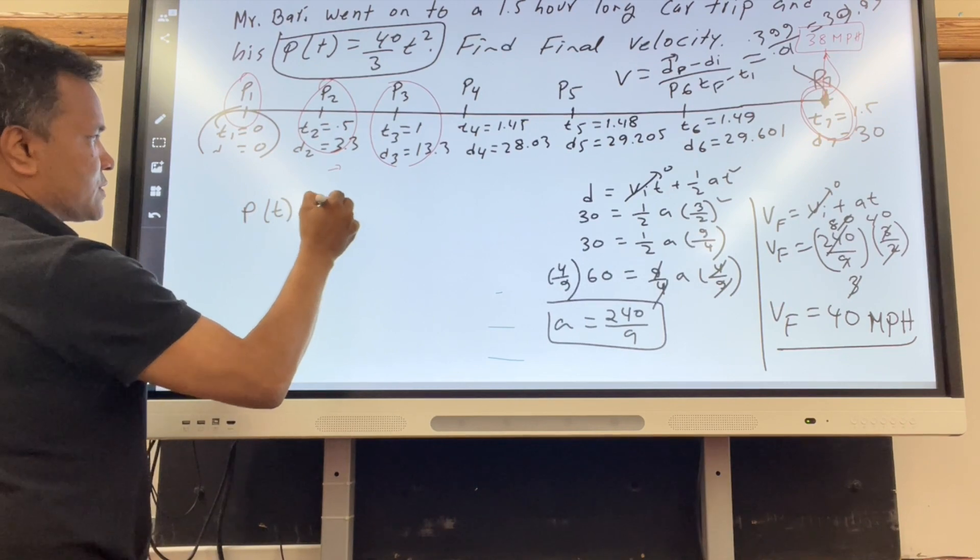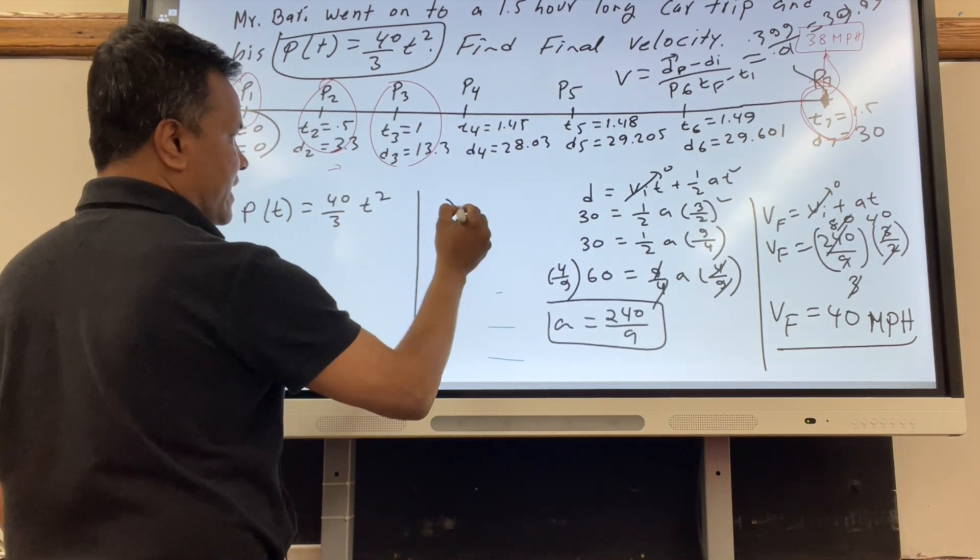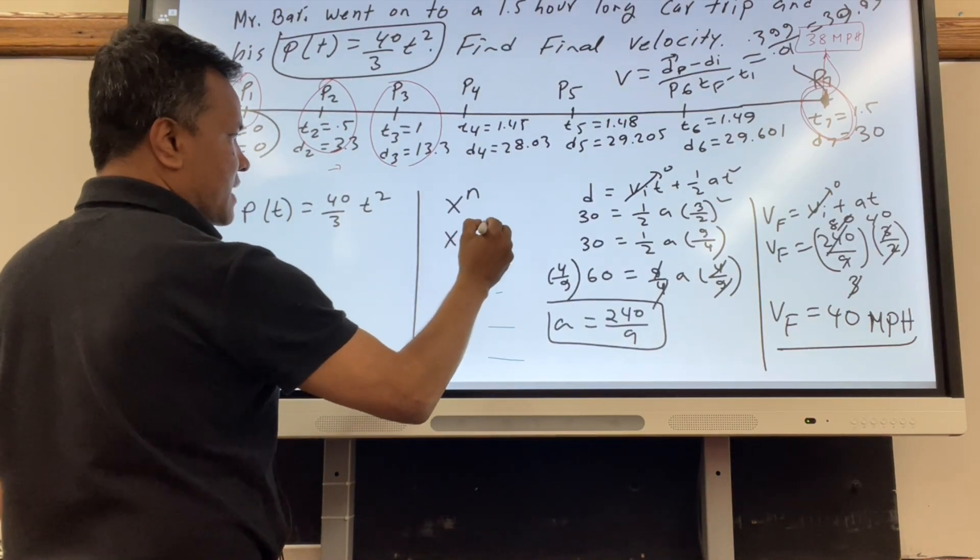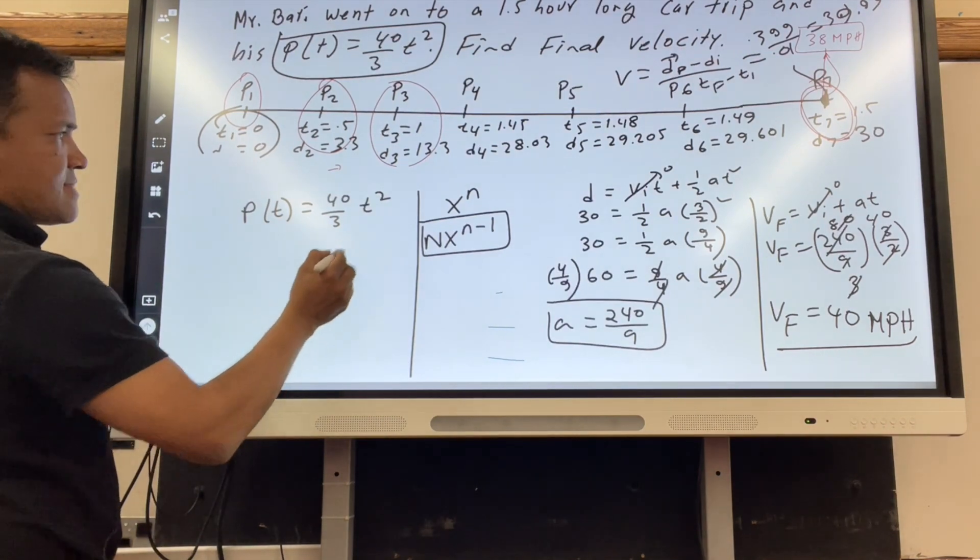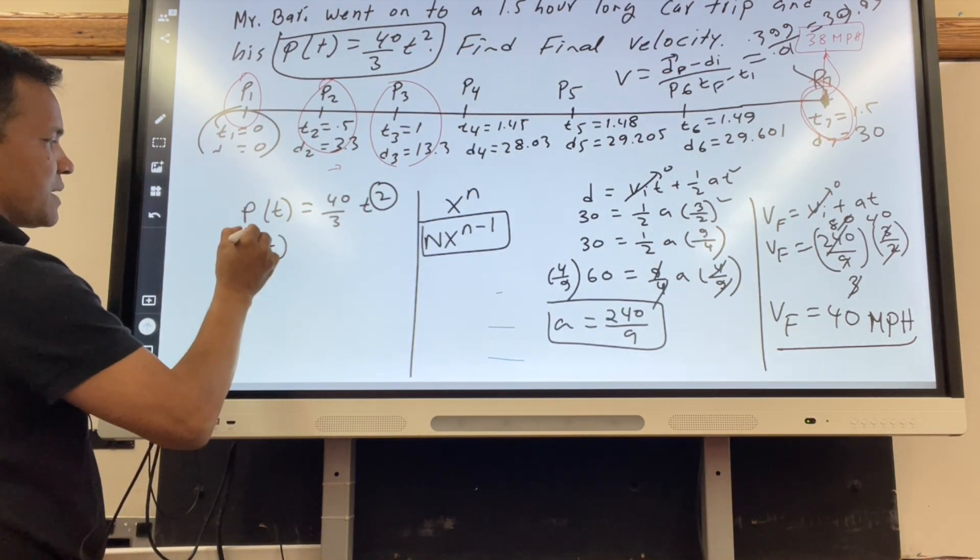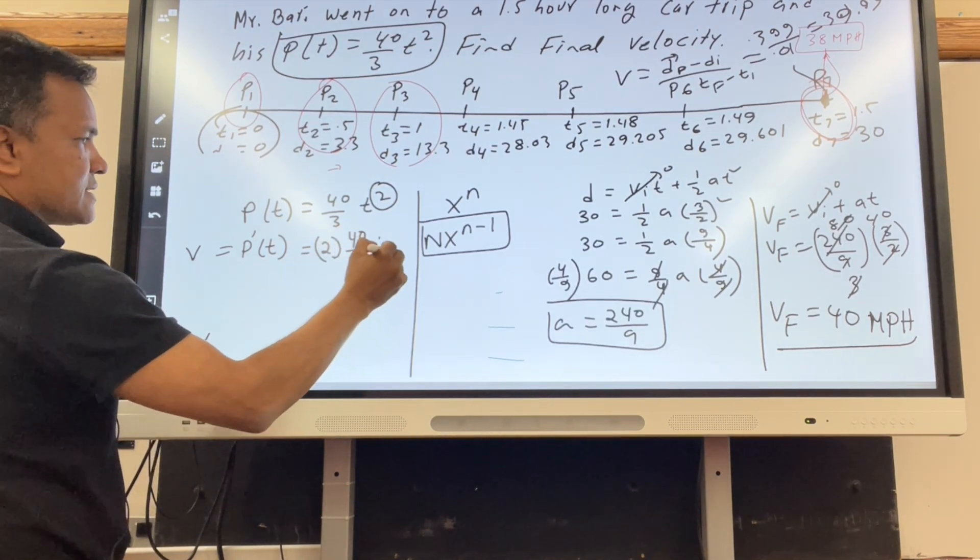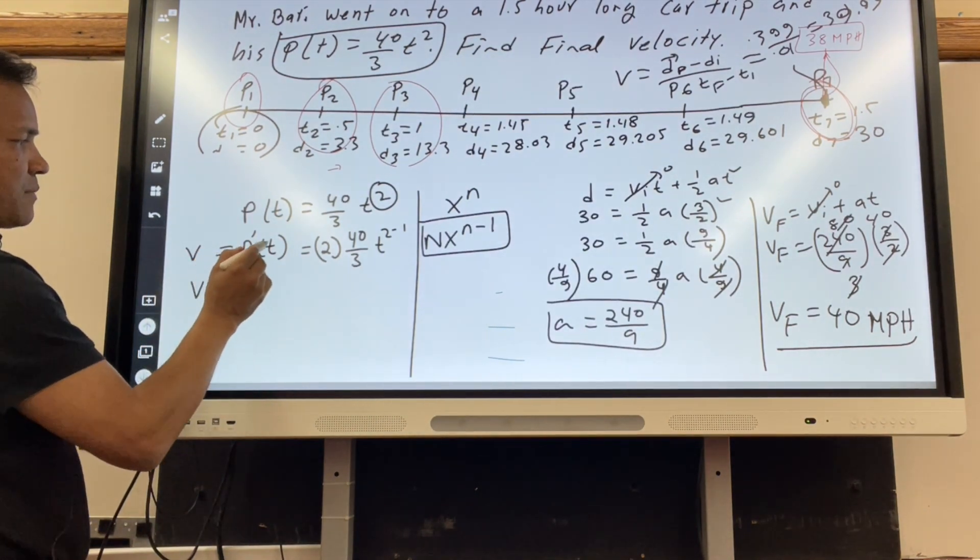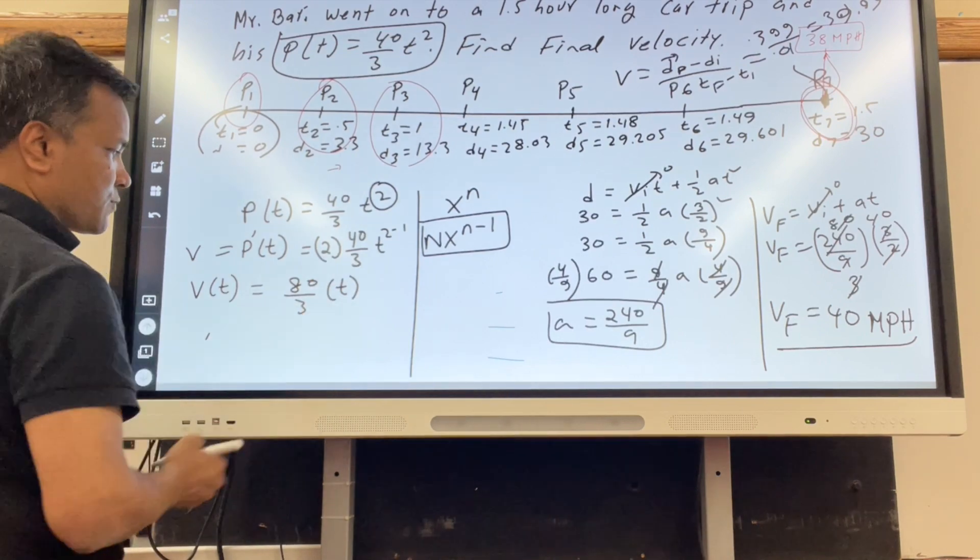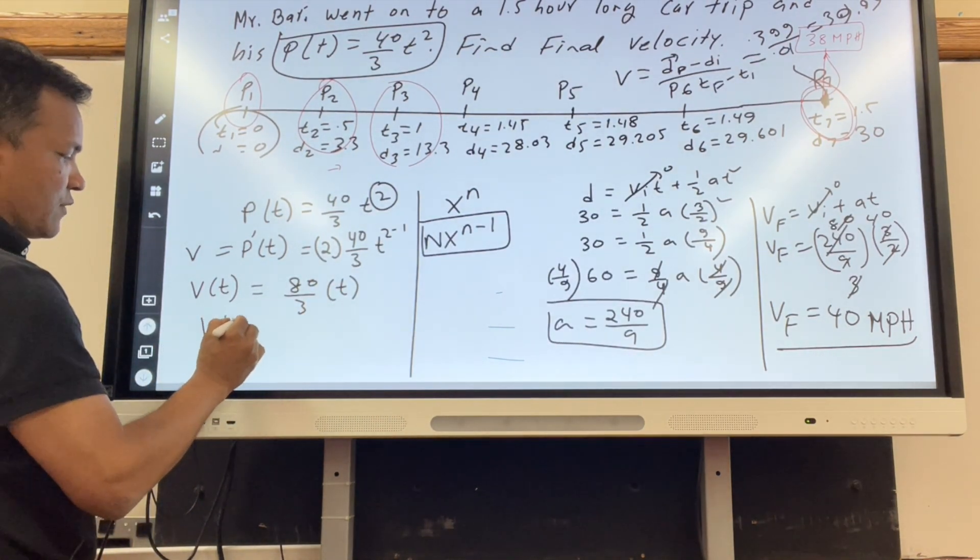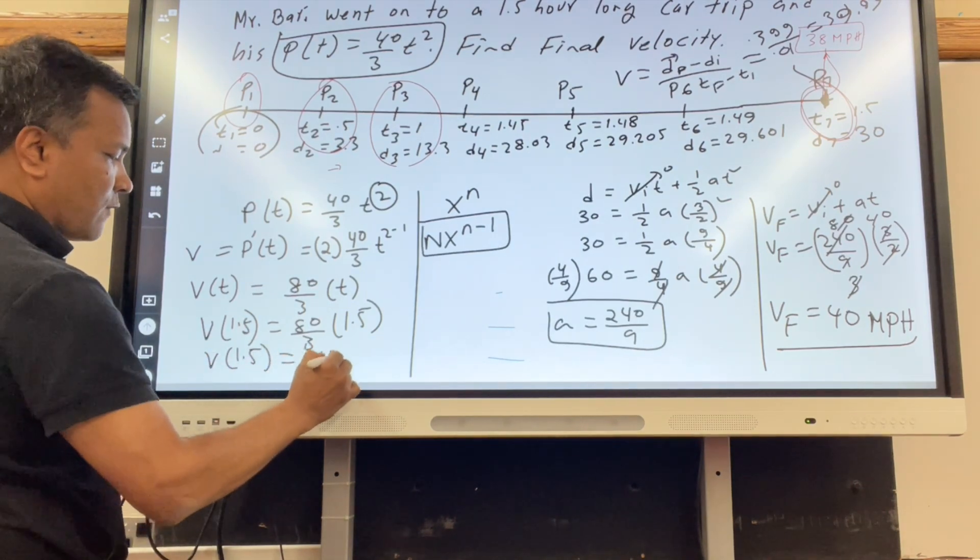In calculus, you have the position function p(t) equals 40 over 3 t squared. This is called the derivative, and how do you take the derivative? Derivative is very easy. x^n becomes n x^(n-1). You put n over here and that's it. So p'(t), which is the velocity, equals 2 times 40 over 3 t^(2-1). Instead of p'(t), we call it v(t) because the first derivative gives velocity. So 80 over 3 t. Velocity at 1.5 is 80 over 3 times 1.5, which is 40 miles per hour.